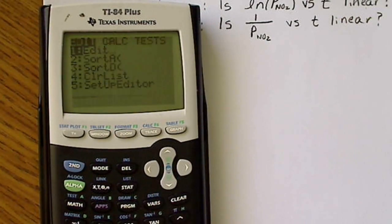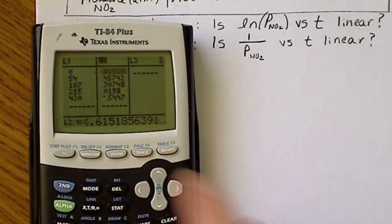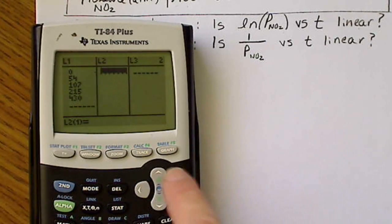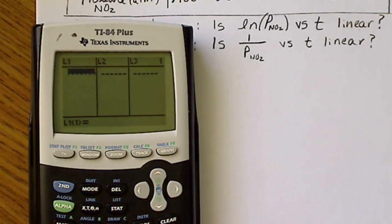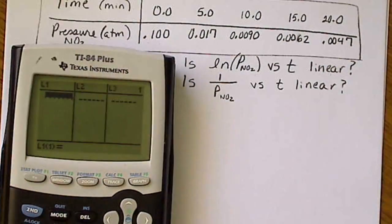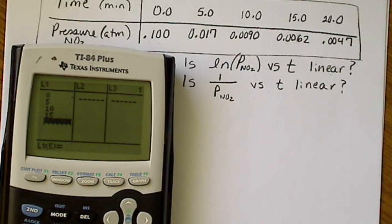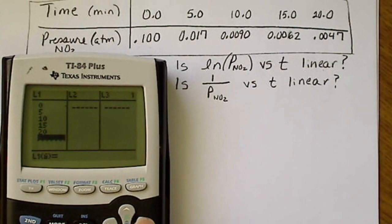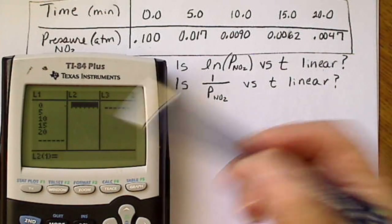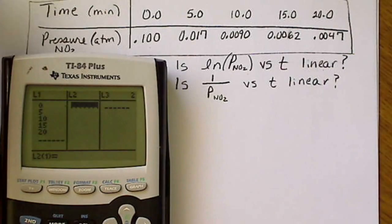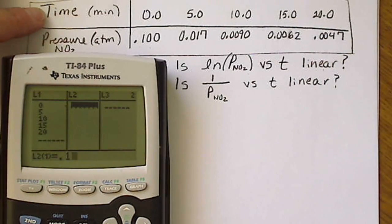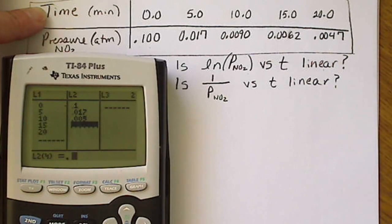To test for first order, I'll hit the STAT key, go to Edit, and clear out the lists. I'll enter the time values: 0, 5, 10, 15, and 20. Then I'll enter the pressure data values into L2: 0.1, 0.017, 0.009, and 0.006, before taking the natural log.